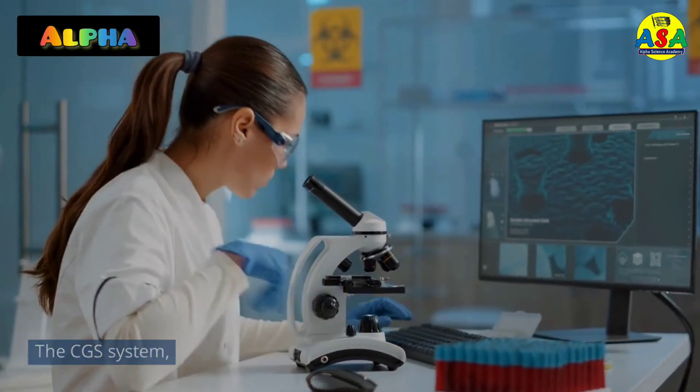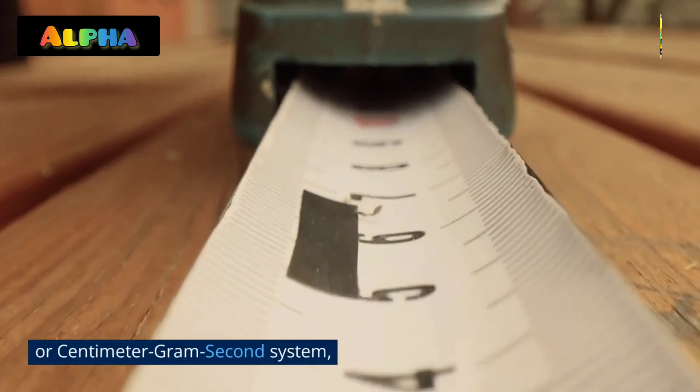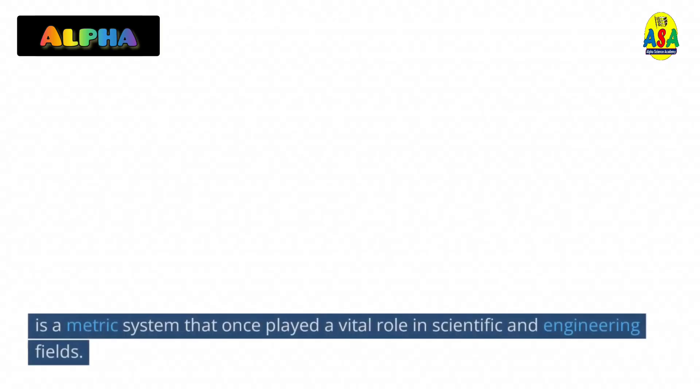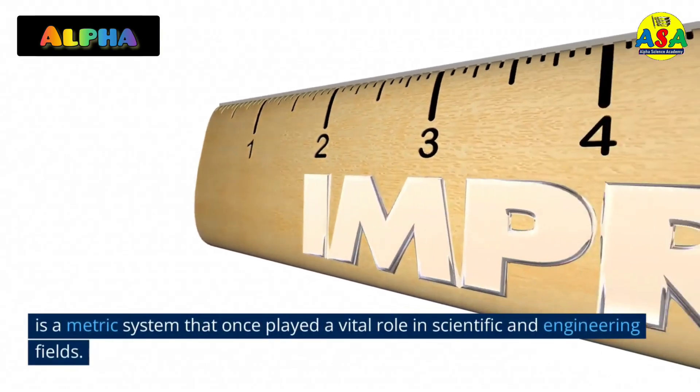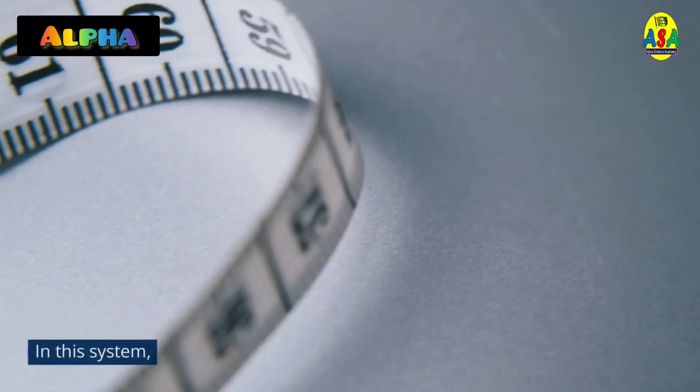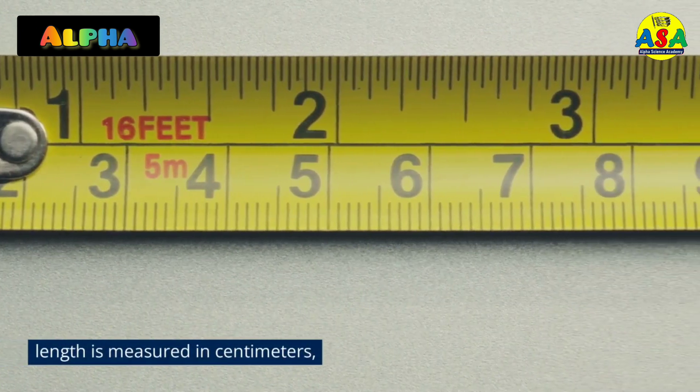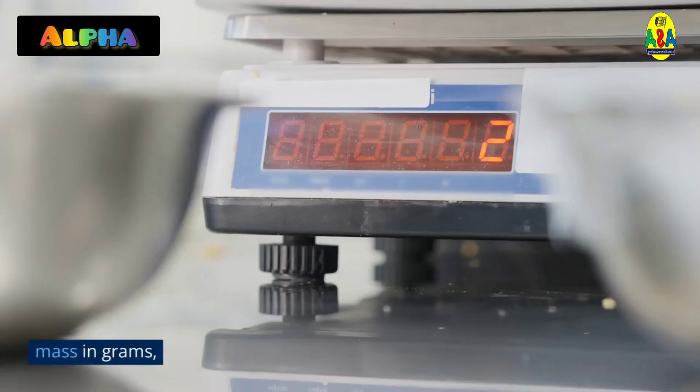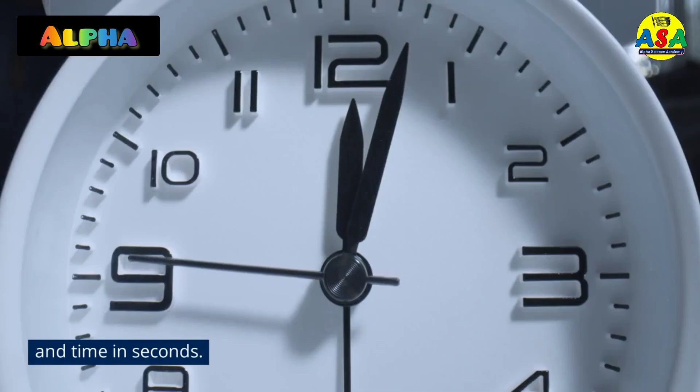The CGS system, or centimeter-gram-second system, is a metric system that once played a vital role in scientific and engineering fields. In this system, length is measured in centimeters, mass in grams, and time in seconds.